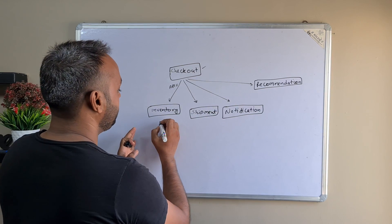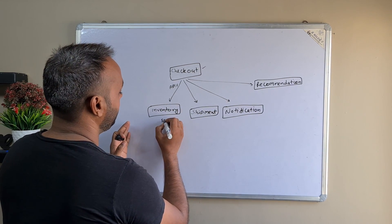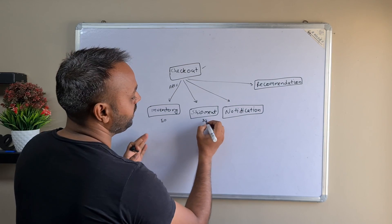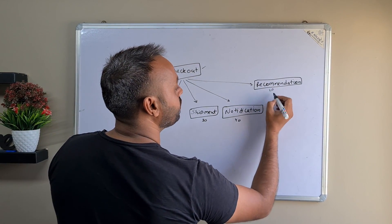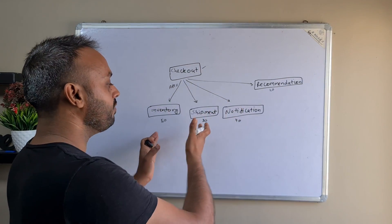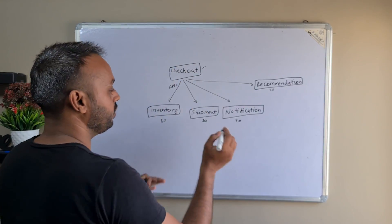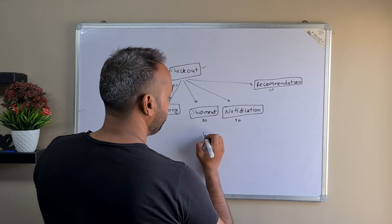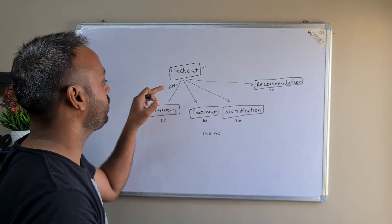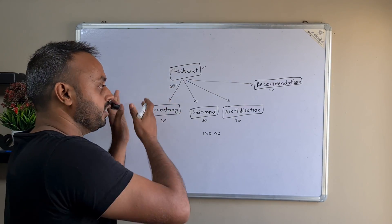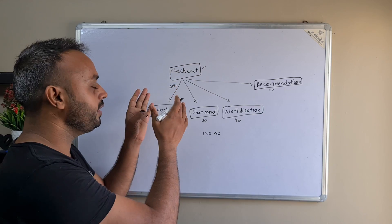The problem here is that these services will take some time. Let's say inventory adds a latency of 50 milliseconds, shipment 30 milliseconds, notification 40 milliseconds, and recommendation 20 milliseconds. So we are adding 140 milliseconds of latency to the checkout service because it is calling all of these services synchronously.